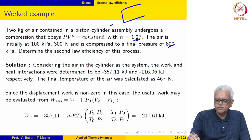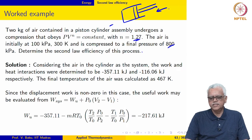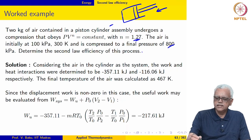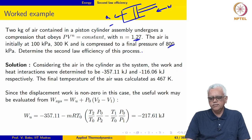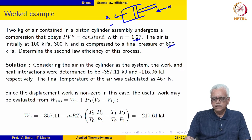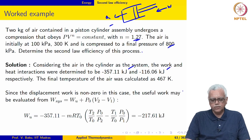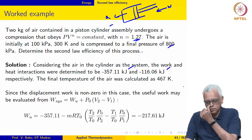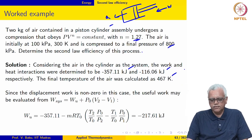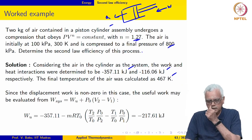We have a piston-cylinder mechanism which contains air initially at 100 kPa and 300 Kelvin, and the air is compressed. At the same time heat transfer also takes place. We are asked to calculate the second law efficiency for this process. This example was already worked out earlier, and the work and heat interactions were calculated to be minus 357.11 kilojoules and minus 116.06 kilojoules. The final temperature was calculated to be 467 Kelvin.